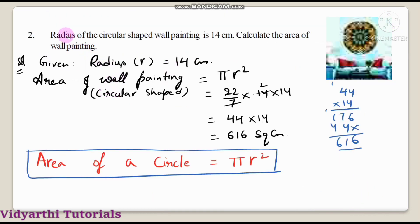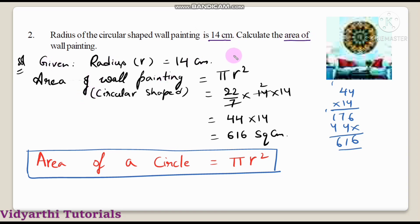Question number 2: the radius of a circle-shaped wall painting is 14 centimeters. Calculate the area of the wall painting. The wall painting is circular in shape. Given radius is equal to 14 centimeters. Find the area of the wall painting.